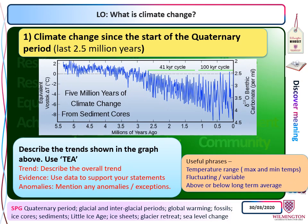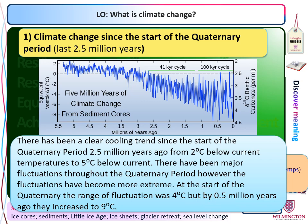For Task B, look for the overall trend, use some evidence, talk about degrees and time in millions of years, try to find anomalies, refer to the temperature range and fluctuations, and note whether temperatures were above or below average. There is a model answer you can pause and check — but don't just copy it, think about it, because it may need checking.